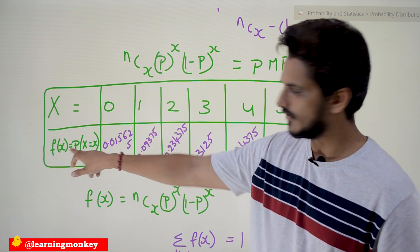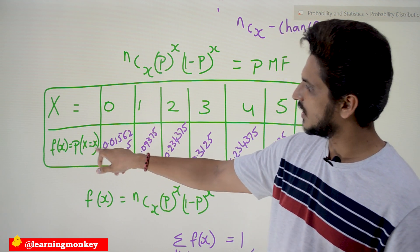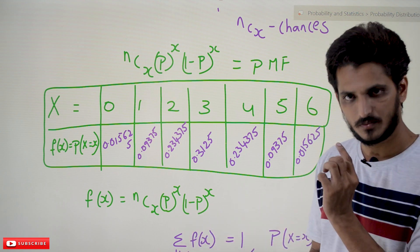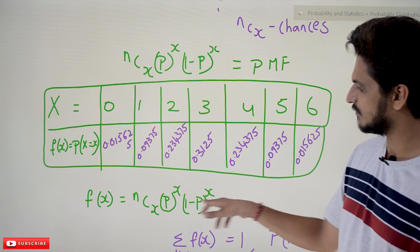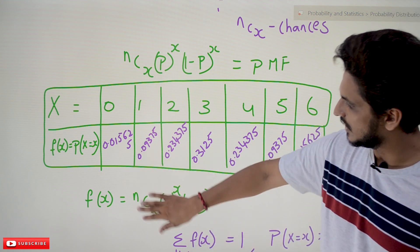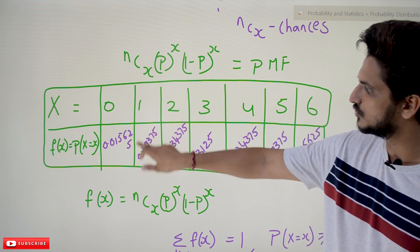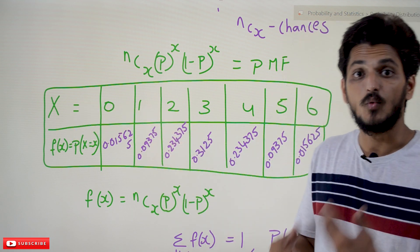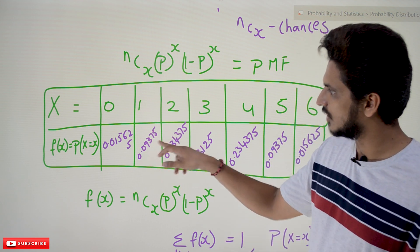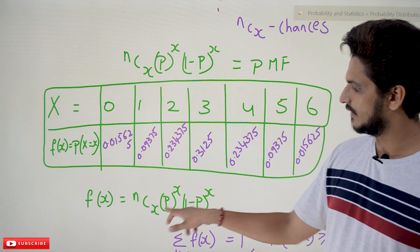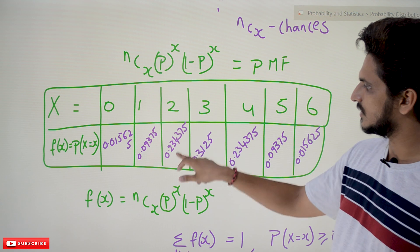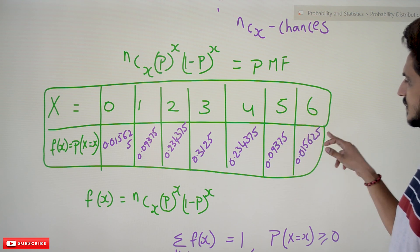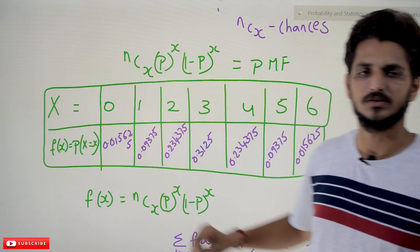This is what binomial distribution means. For x=0: f(0) = 6C0 × p^0 × (1−p)^6, which gives 0.015625. For x=1: one success out of 6 experiments gives 0.09375. For x=2, 3, 4, 5, and 6 successes, we substitute into the equation to get the respective probability values for each case.